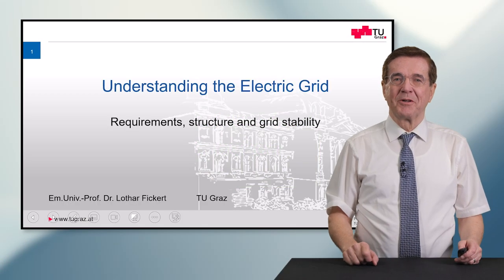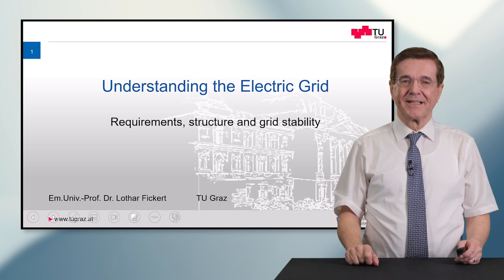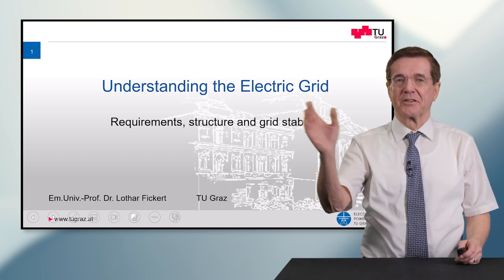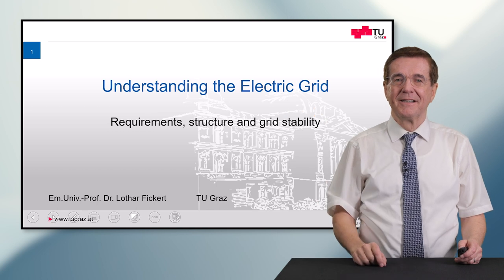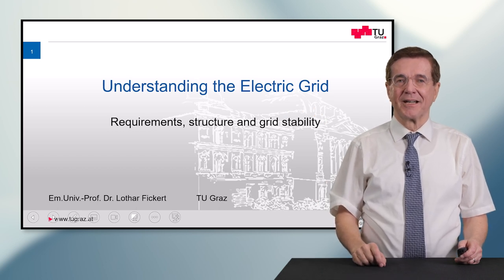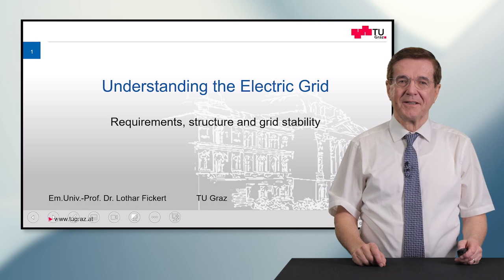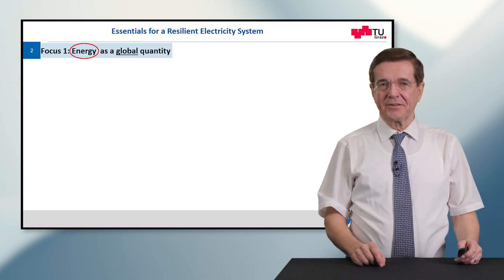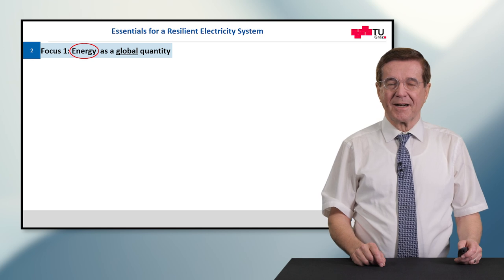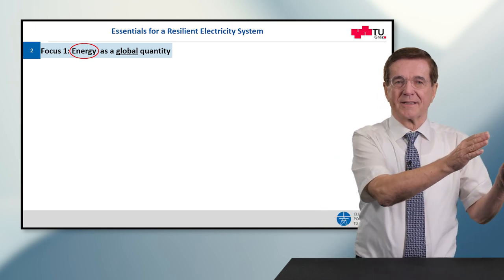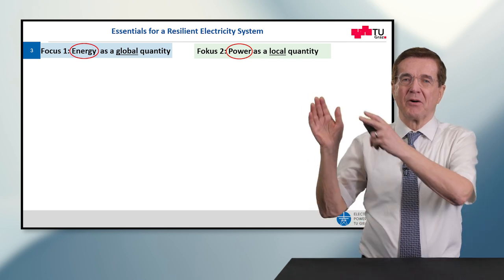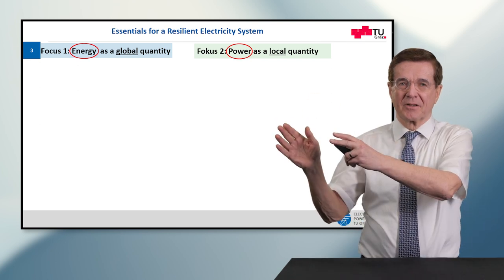Hello and welcome everybody to today's lecture about understanding the electric grid — the requirements, structure, and grid stability, which are essential for a reliable and safe supply of electrical energy. The essentials for a resilient electricity system have two focuses: energy as a global quantity and power as a local quantity.